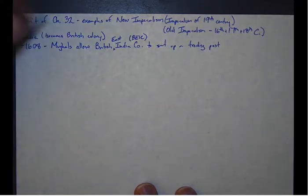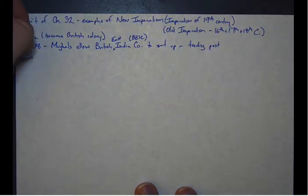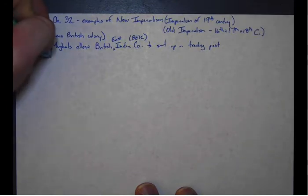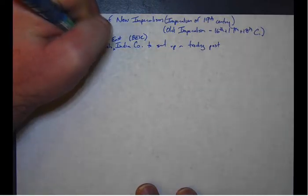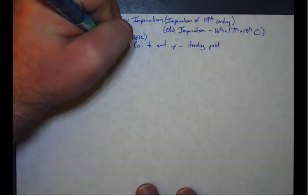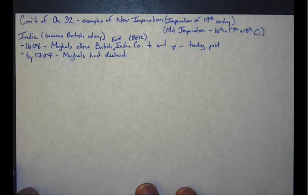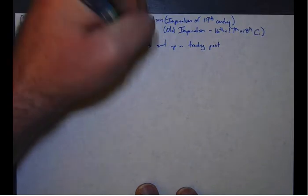Over the next hundred years, by 1707, the Mughals had declined. The last really important Mughal Emperor, Aurangzeb, had died.